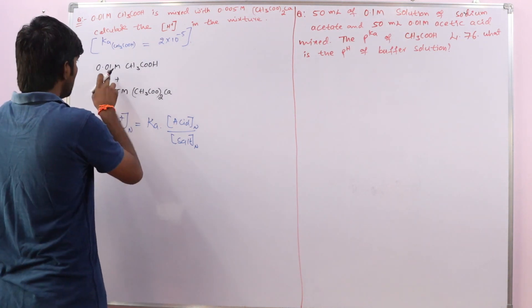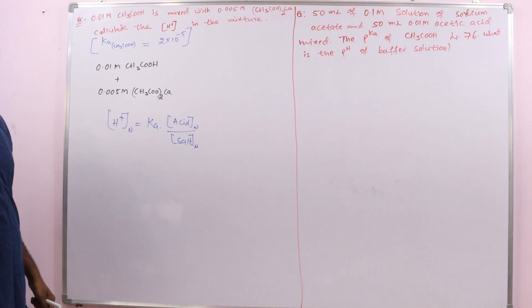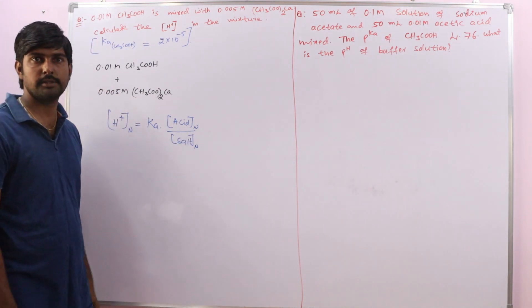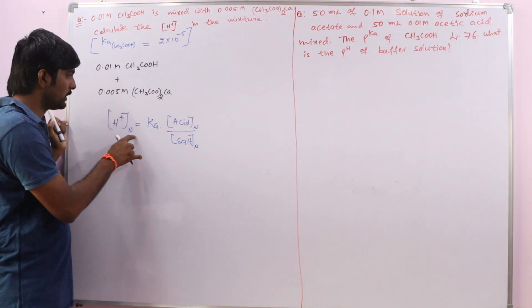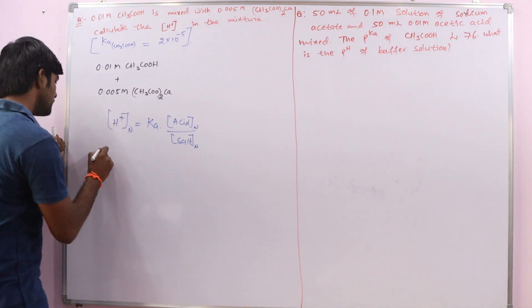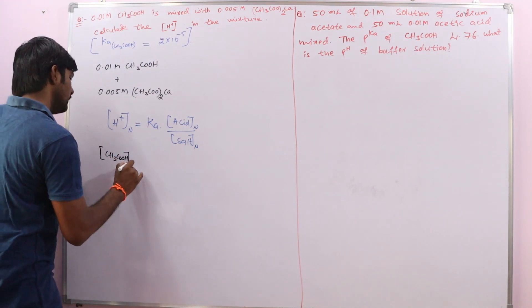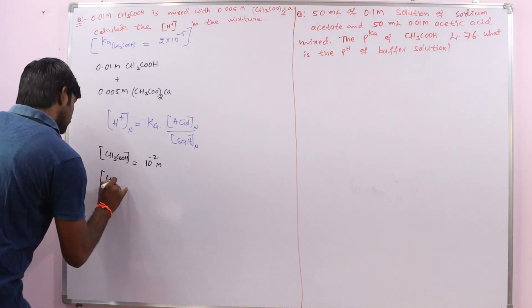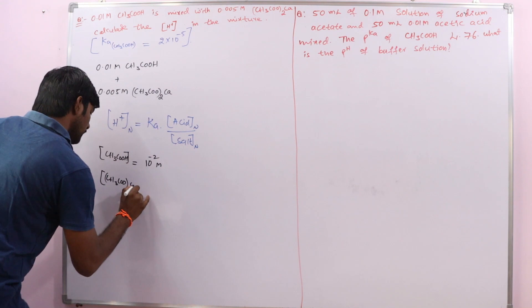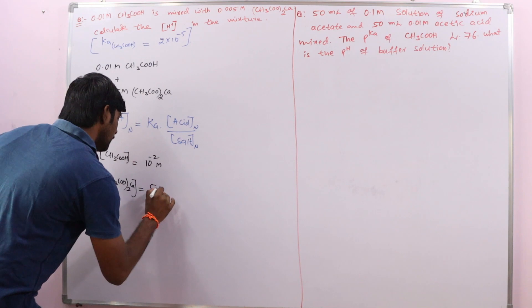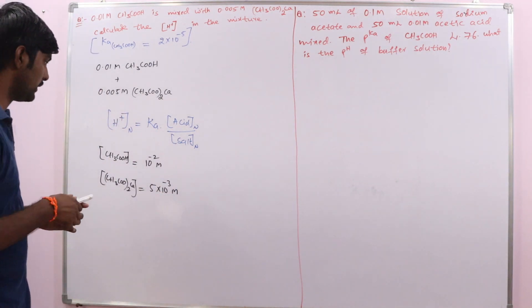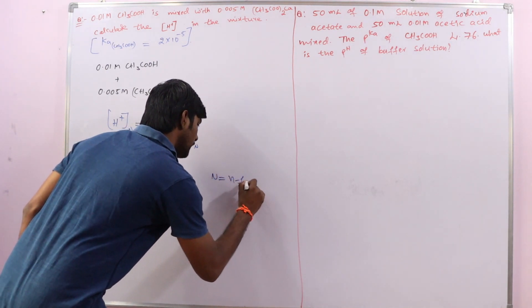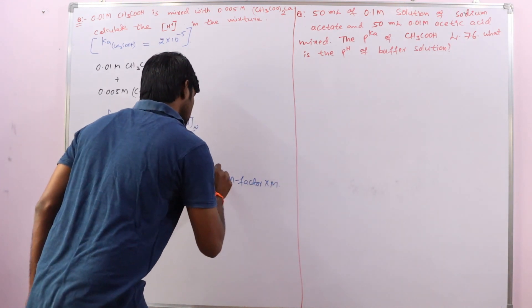The concentrations are provided in molarities. Remember, as mentioned in previous classes, we must express concentrations in normality during acid-base calculations — whether it is a salt, buffer, or any other case, we must use normality. So we need to convert these molarities to normalities using the relation: Normality = n-factor × Molarity.